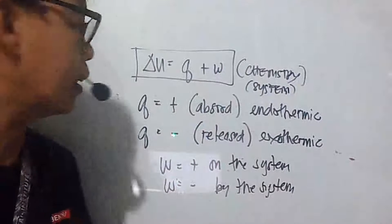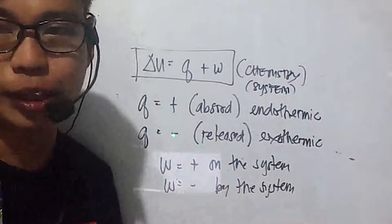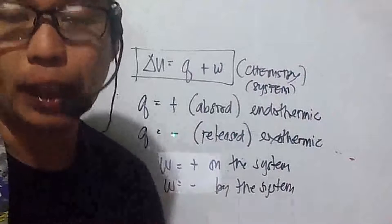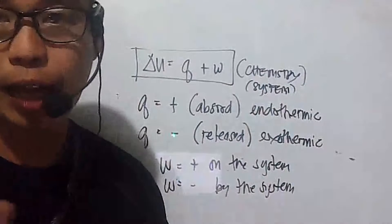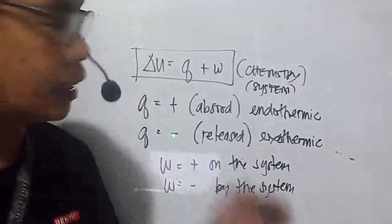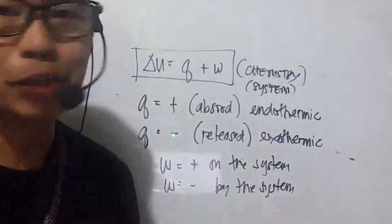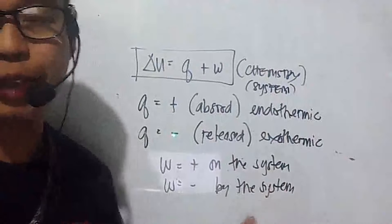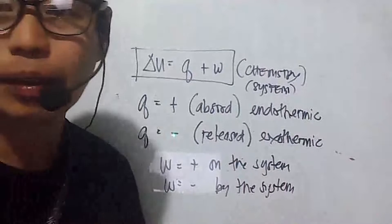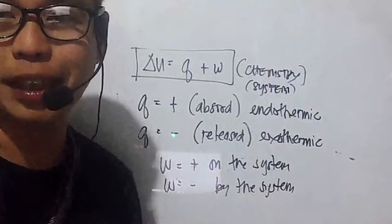In chemistry, q is positive when you absorb heat and negative when you release it — these are the endothermic and exothermic processes. I'll be ending this video here and continuing with problem solving in the next video. Please try to understand the two formulas first, and wait for the second part.